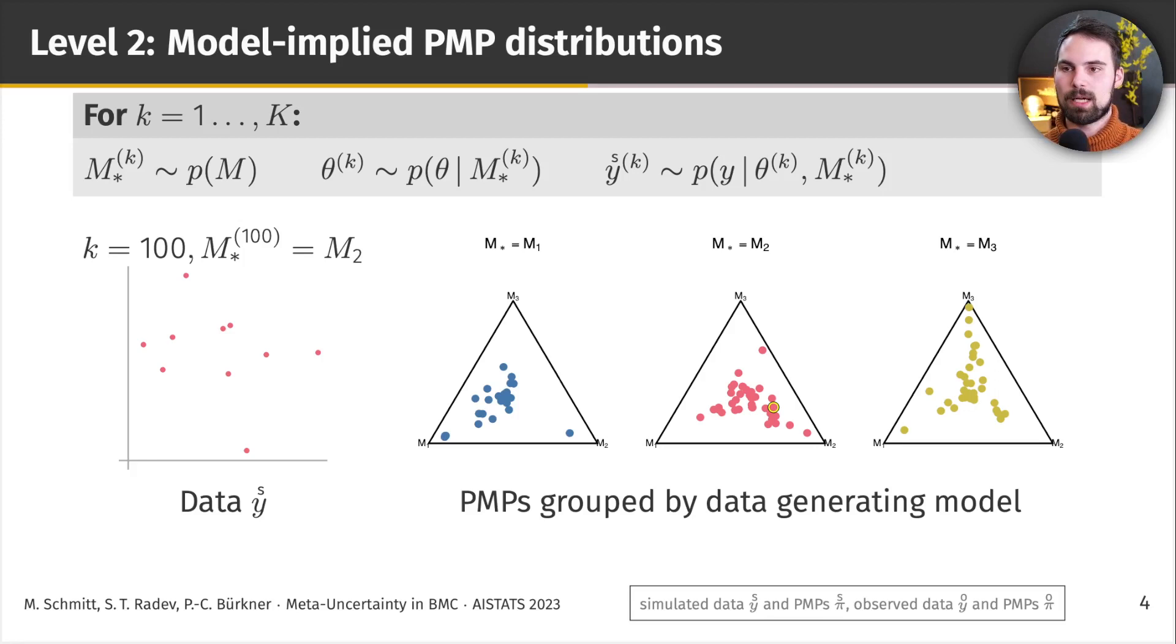When we repeat this 100 times, in fact, we see how those patterns emerge. For instance, data that's generated by M2, so the middle triangle here, have roughly balanced posterior model probabilities, and in some cases, we have larger evidence for M2. Data that's generated by M3, so in the rightmost triangle here, sometimes has large evidence for M3. See, with this point, which represents one data set, that's really close to M3. But then again, there's also one data set that has large evidence for M1. So, we see a substantially different pattern here, which is just a visualization of the dance of Bayes factors again, or the dance of posterior model probabilities.